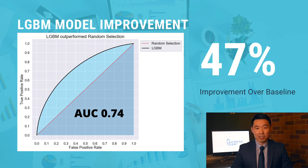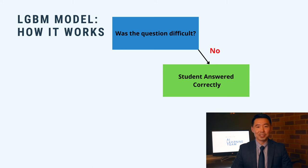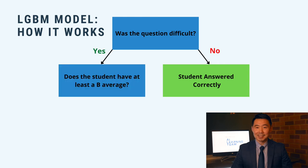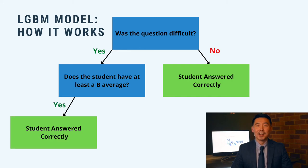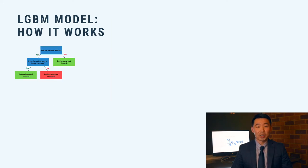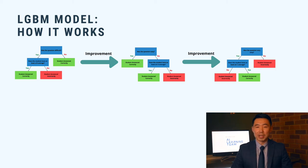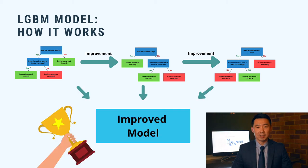Let's examine a simplified representation of how our model works. The model begins by asking a question such as, 'Was the question difficult?' If the response is no, the model predicts the student answered correctly. If the response is yes, the model then asks another question: 'Does the student have at least a B average?' If yes, the model predicts the answer is correct; otherwise, it predicts incorrect. After the tree is complete, the model transfers what it learned to a new tree. This cycle repeats many times, with each tree attempting to reduce the errors of its predecessor, ultimately improving the predictive capability of the model.